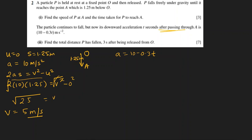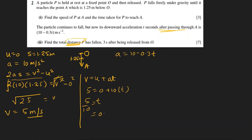Find the total distance. It is not displacement — keep in mind we can get displacement directly from acceleration but not distance. P has fallen three seconds after being released from O. We didn't find time in the previous part, so let's find time also. Using V equals U plus AT: V is 5, U is 0, acceleration is 10, so time comes out to be 5 over 10, which is 0.5 seconds.